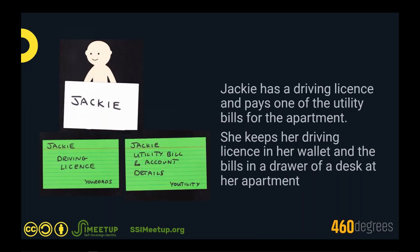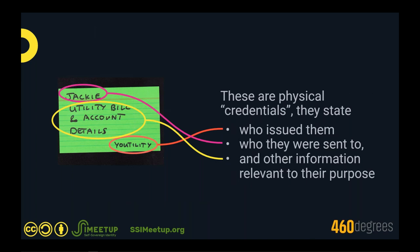Part one is about the world we live in now. The theme is: what's it like to rent a new apartment? Meet Jackie — she's a successful young adult living in an apartment who has just got a new job and wants to move nearer to work. Jackie has accumulated a few things, including a driving license kept in her wallet and utility bills in a drawer. These physical artifacts are credentials — they state who issued them, who they were sent to, and any other relevant information.